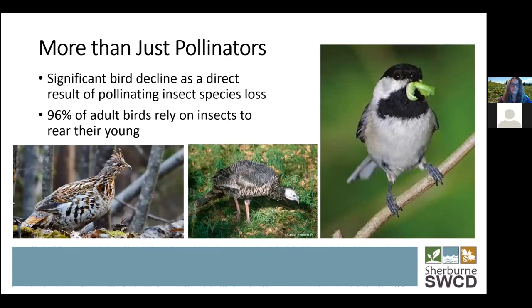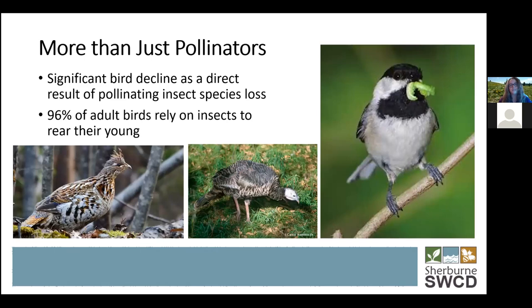More than just pollinators, birds are also in decline as a direct result of the declining pollinator population, because birds require pollinators in their larval state to feed their young. Take a chickadee — they require 6,000 to 9,000 caterpillars just to rear one clutch of young in a season. So if you want to increase birds in your backyard, plant more native plants to draw in those pollinators birds rely on. Aside from songbirds, upland game birds also require insects to feed their young, like grouse, turkey, and pheasant.